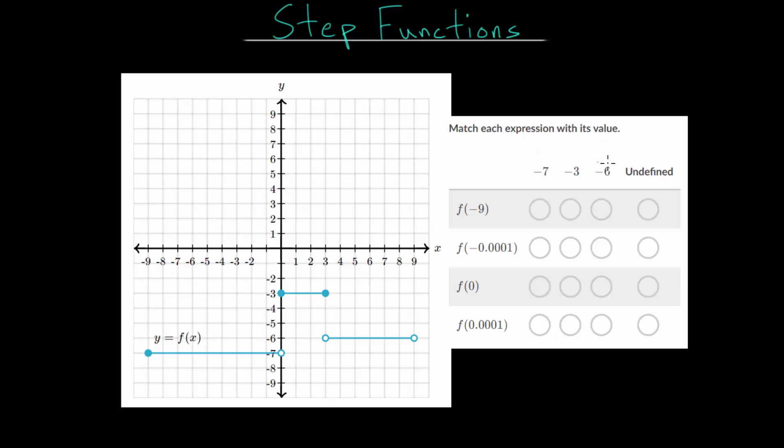So let's just jump right into this problem. We're given the graph of this step function and we need to match each expression with its value. Take careful note of which endpoints are included. If the circle is filled in here that means that negative 9 is part of this interval. But if the circle is not included that means for an x value of zero it's not a part of this lower line here.